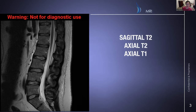You're going to have different sequences, but mainly you're looking at T2 and T1 sequences. T2 is a fluid-sensitive sequence, so any type of fluid will be bright on those sequences. You can see the discs, which are mostly made up of water, are bright. The CSF fluid within the thecal sac is also bright.